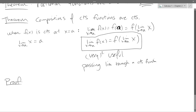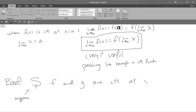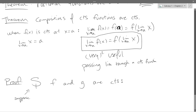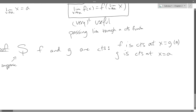We're going to suppose — this half-dollar sign means 'suppose' — that g is continuous at x equals a, and f is continuous at x equals g(a). This may seem a little strange, but if you write out what f and g are doing, it makes sense.